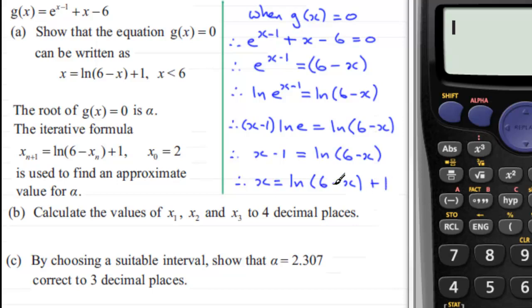It's worthwhile pointing out why x has to be less than 6. If x was more than 6, then the value inside this bracket would be a negative number, and you can't take the log of a negative number. So logs always have to have a positive value here. Okay, so that's that first bit done.